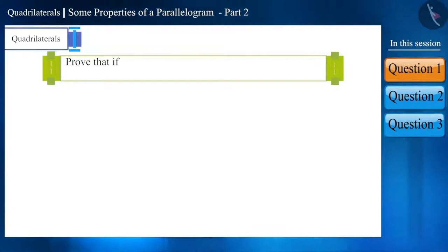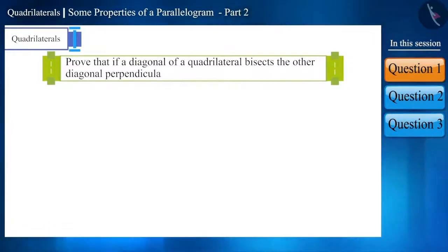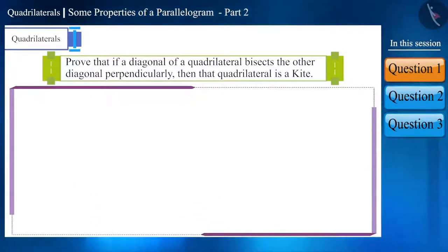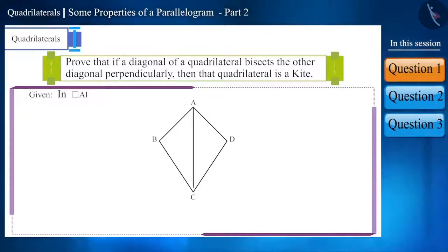Prove that if a diagonal of a quadrilateral bisects the other diagonal perpendicularly, then that quadrilateral is a kite. First of all, let's draw a figure according to the statement. Suppose ABCD is a quadrilateral and diagonal AC is bisecting diagonal BD perpendicularly at point O.